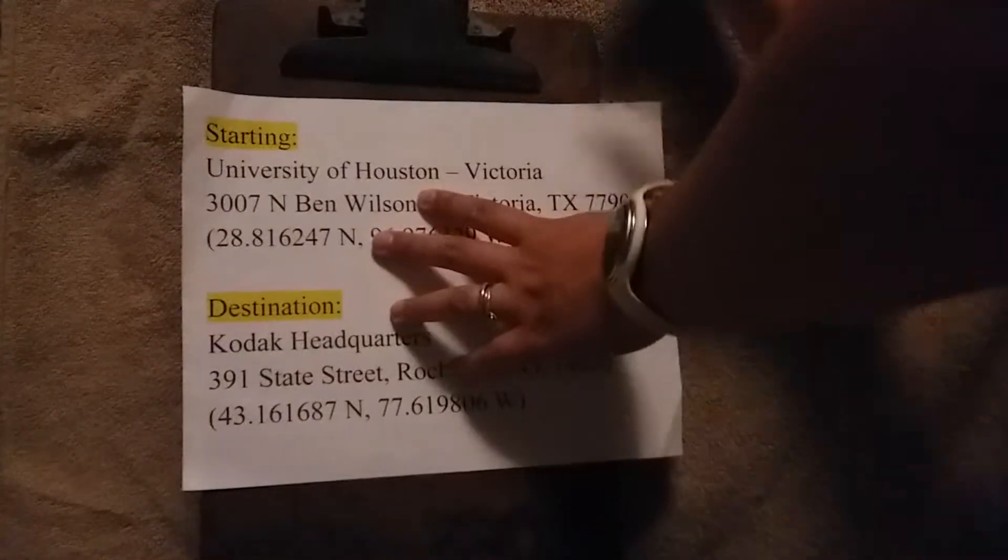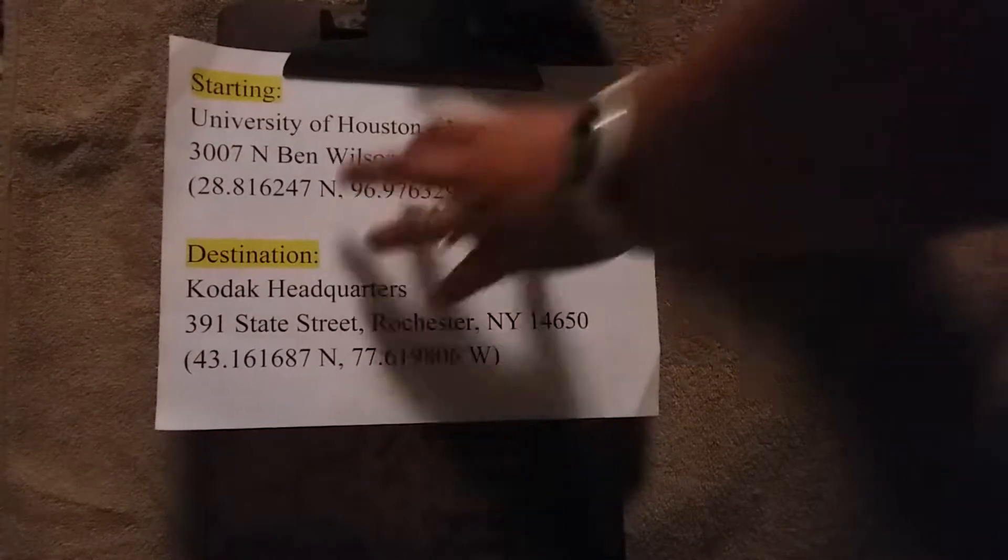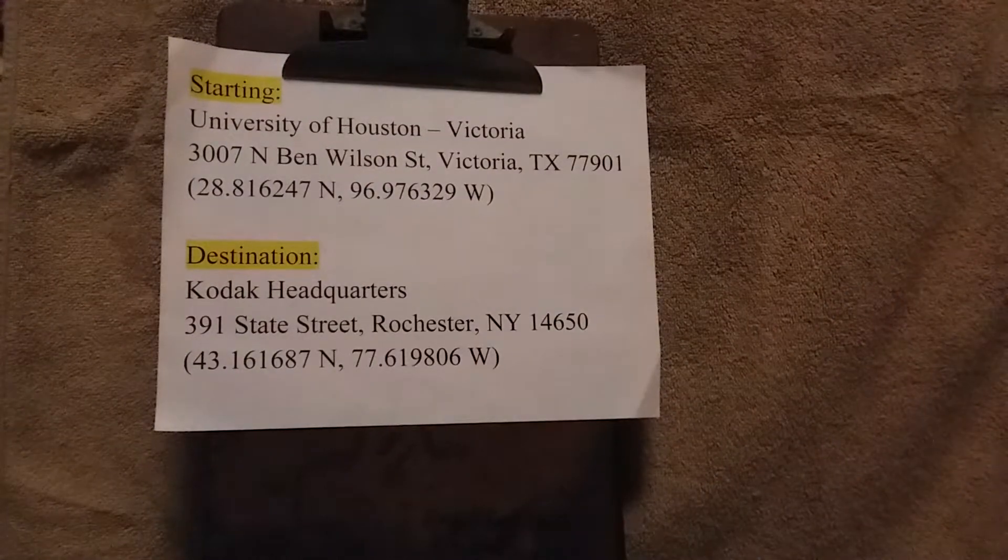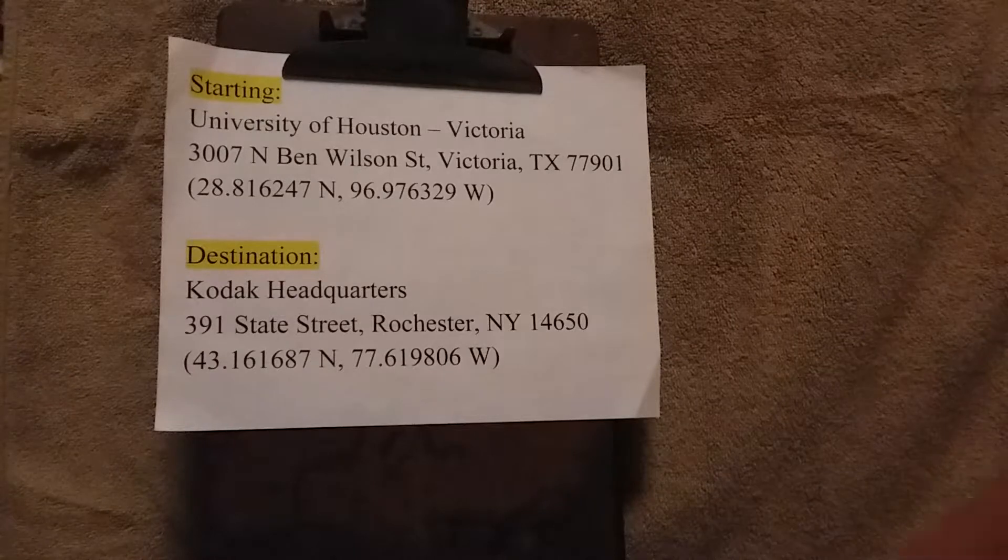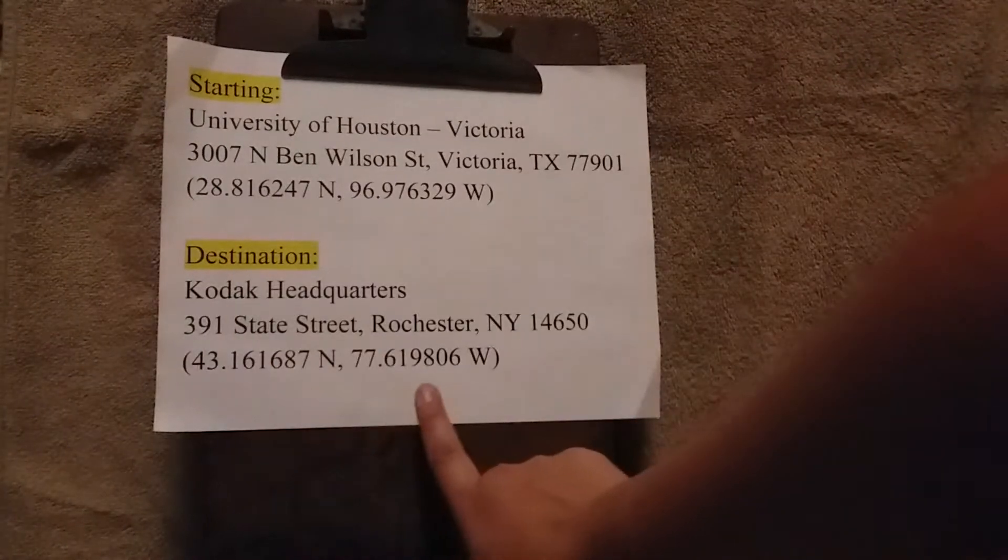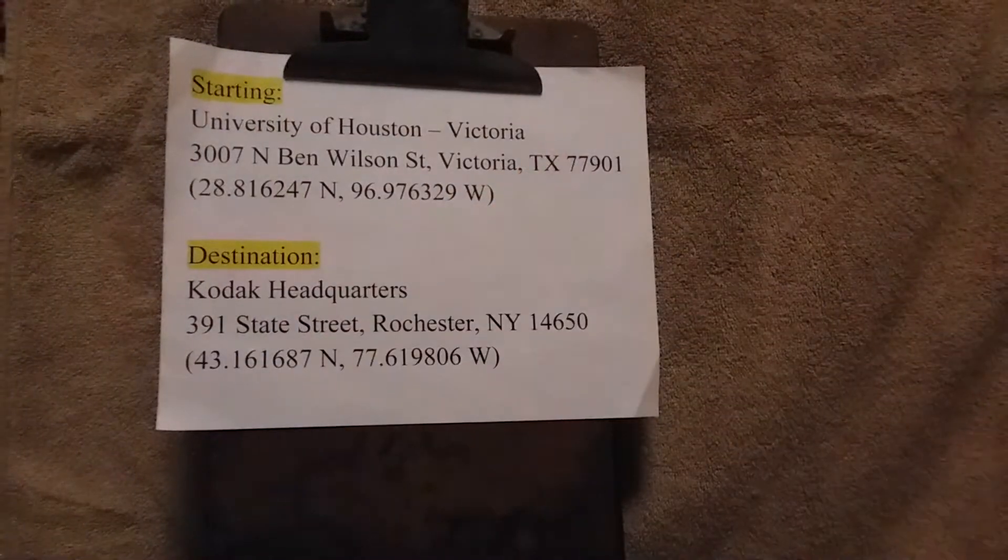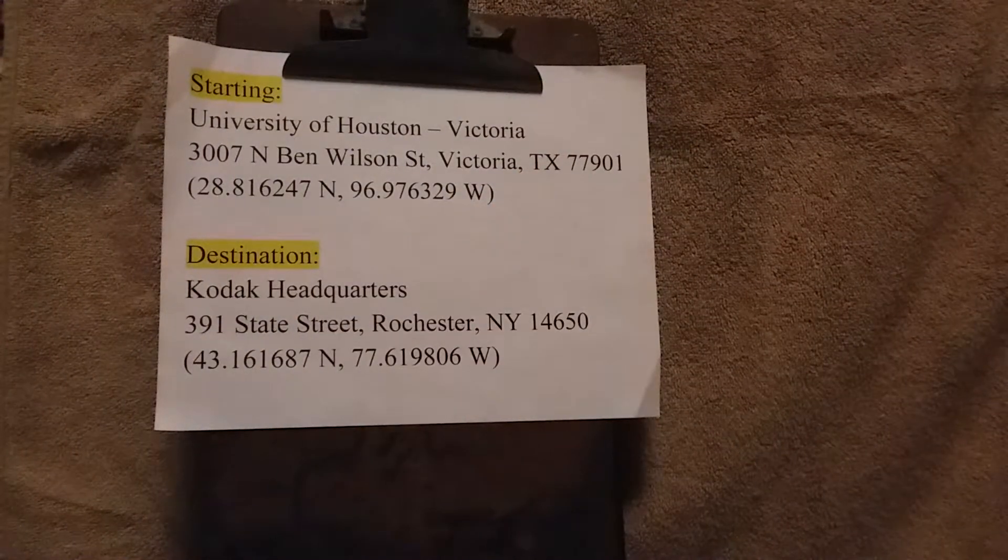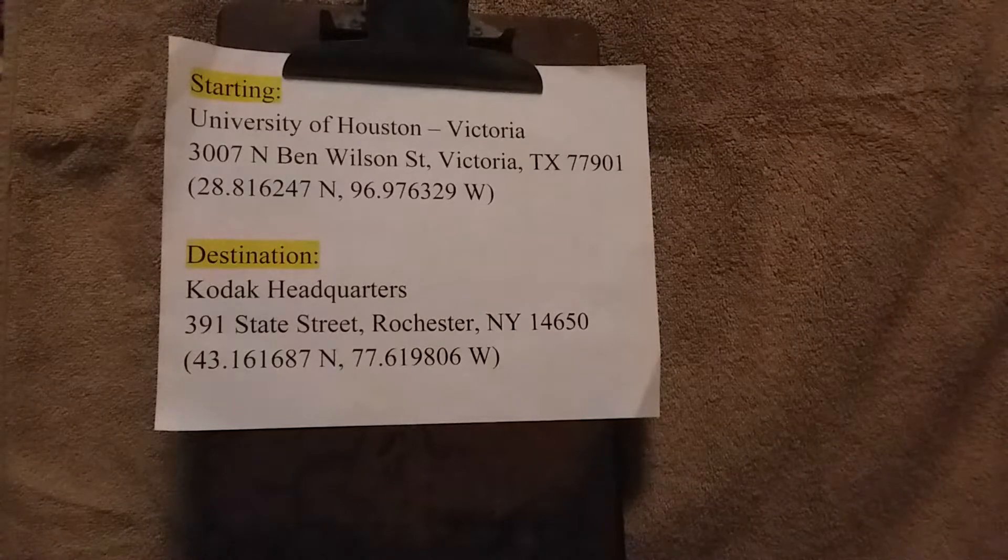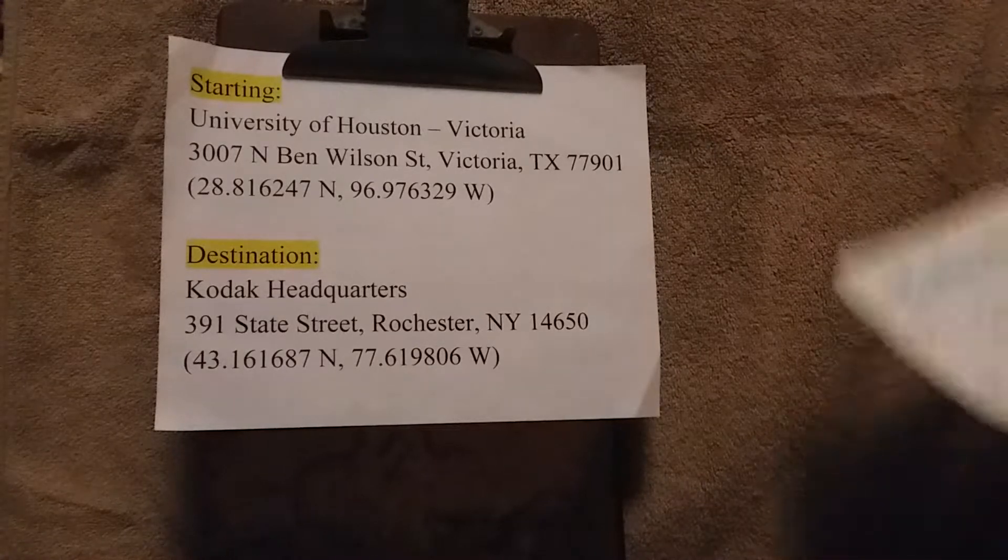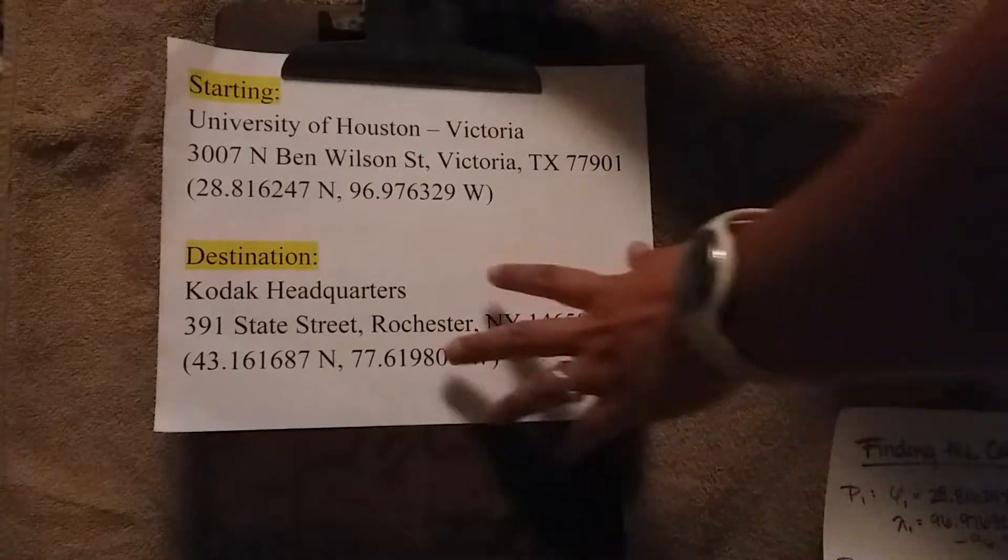What we're going to do today is the second method. Let's begin. We have a starting point and an ending point. Our starting point is our campus in Victoria, Texas, and our ending point is Kodak Headquarters in Rochester, New York. Here I've put in, in decimal degrees, the coordinates of both locations. We're going to take a look at how to calculate it using Pythagoras and trig functions.